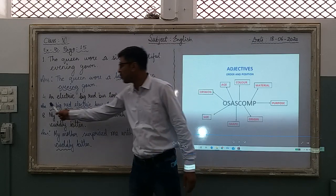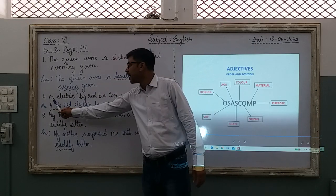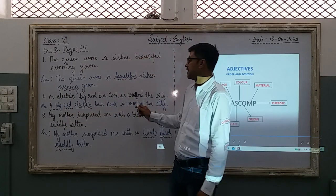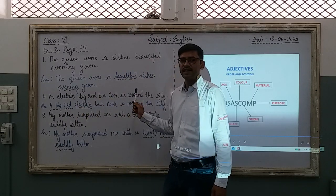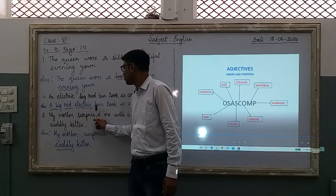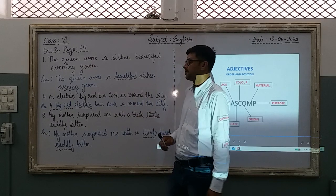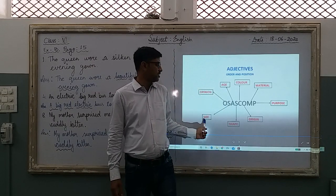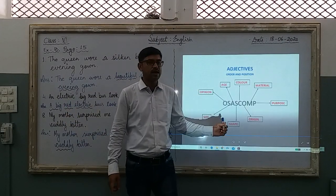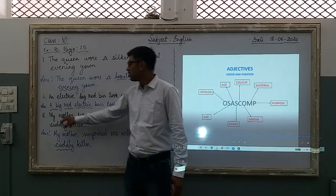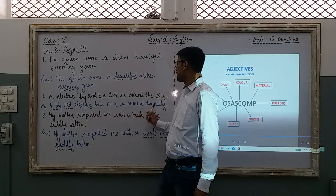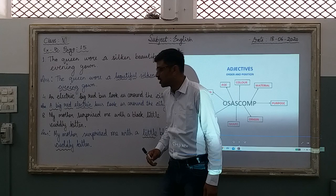Sentence number four: 'An electric big red bus took us around the city.' There are mistakes — the adjectives are in the wrong order. The corrected form is: 'A big red electric bus took us around the city.' Here size comes first, then color, then material or type.